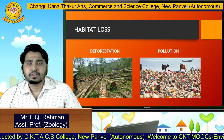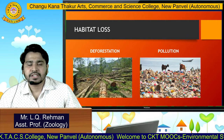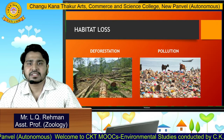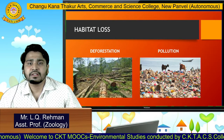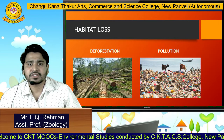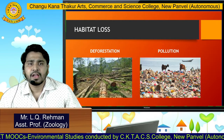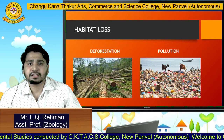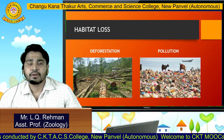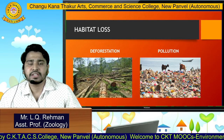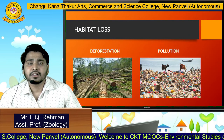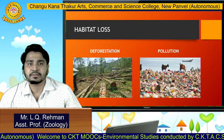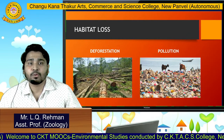Habitat loss is caused due to deforestation and pollution. Deforestation is mainly due to extreme cutting of trees, logging of woods, or overgrazing. Pollution examples include harmful toxic chemicals and effluent released from industries and factories directly into aquatic bodies, which leads to difficulty for aquatic animals and causes harm to aquatic life.